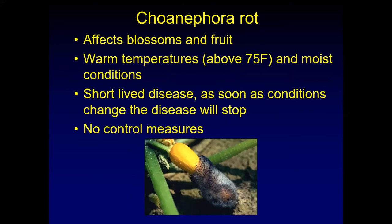Choanephora is another fungus that affects the blossoms and fruit of summer squash. It favors warm temperatures above 75 degrees Fahrenheit with moist conditions, so you could see it in high tunnel or greenhouse production. It's a short-lived disease — as soon as conditions change, the disease will stop and no new infections occur. Just like Rhizopus, there are no control measures. Remove infected fruit while it's still showing only the white mycelium, before you can see the black masses of spores that could then spread to other fruit and flowers.